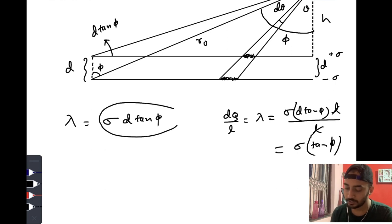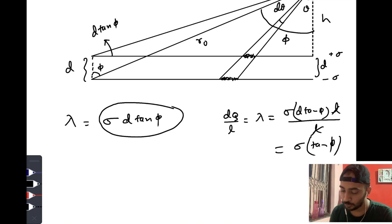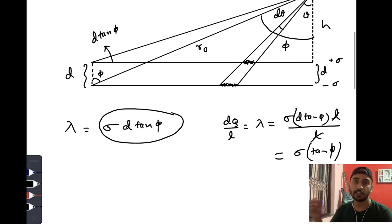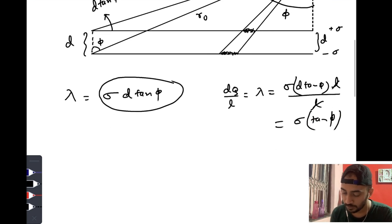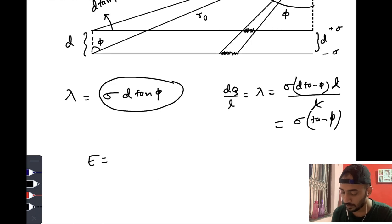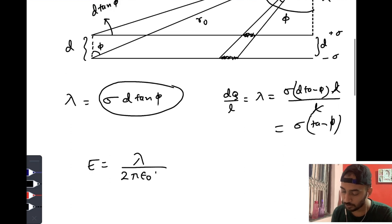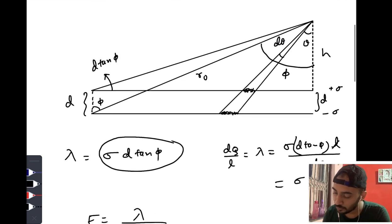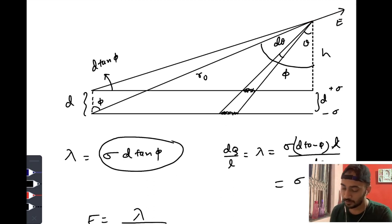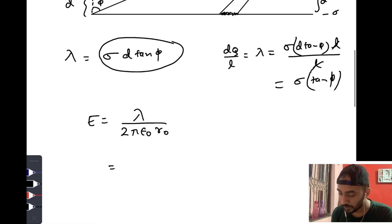This is the linear charge density of this portion, and due to an infinite line charge we know that the electric field would be E = λ / (2πε₀·r₀), and the direction would be radially outward.